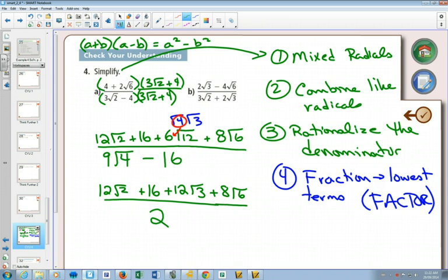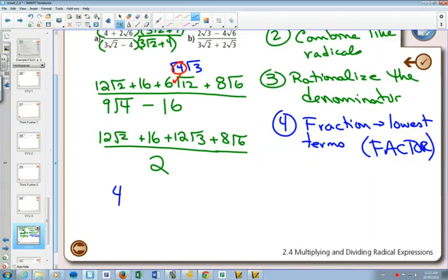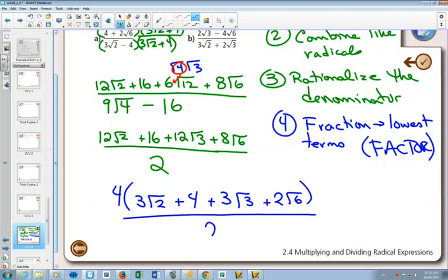But over here, is our fraction in lowest terms? Is there something in all four of those that you could factor out? You could factor out a 4, right? If I take out a 4, I'll be left with 3 root 2s plus 4 plus 3 root 3s plus 2 root 6s, all divided by 2.